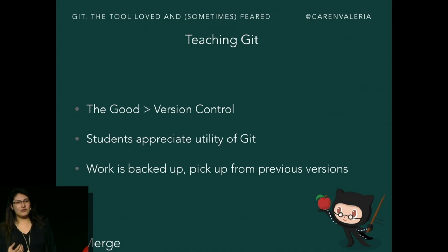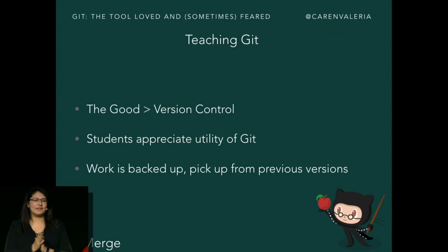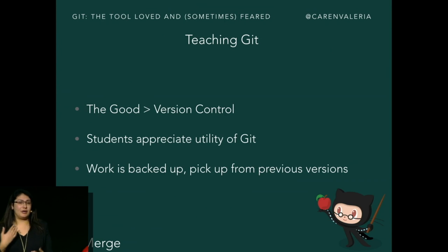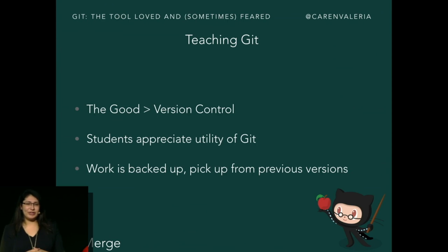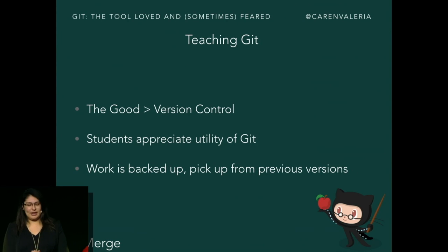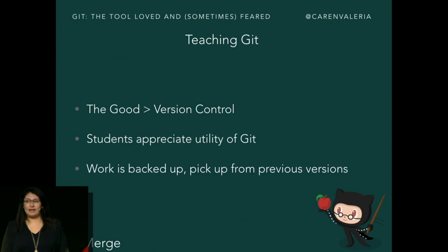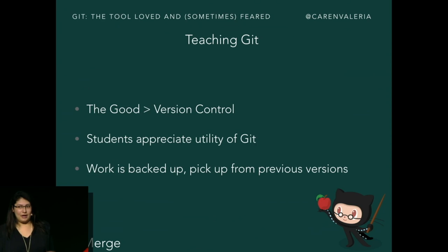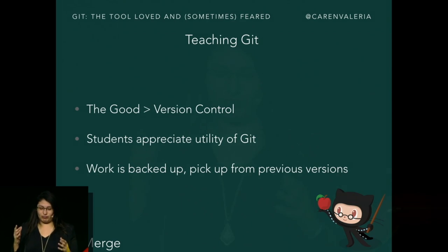The good: version control. Students really appreciated the great utility of using Git. We gave them this example: pretend you're writing a book and you and a few other authors are going to work collaboratively, making sure everything is working appropriately so you have all your edits, and if you mess up you can go back to edits that were working well. Students really appreciated that concept - if I mess up, I can go back to when the code actually worked.